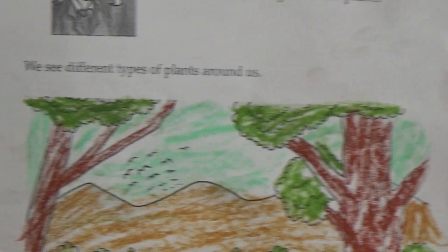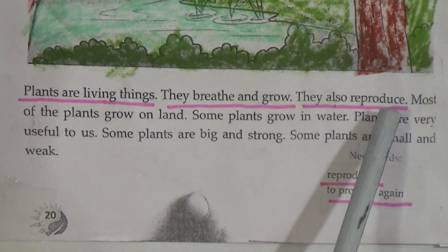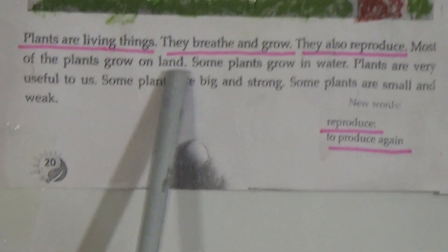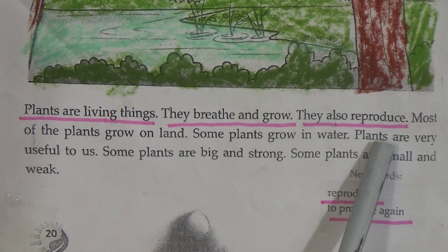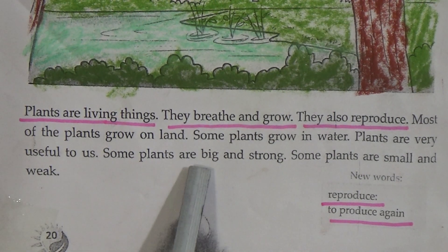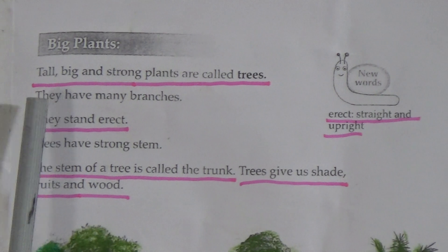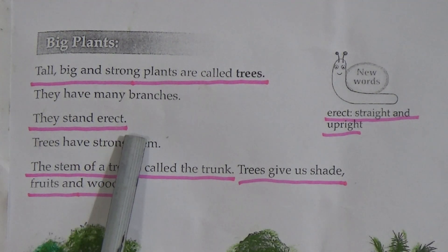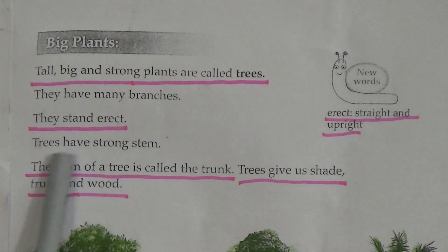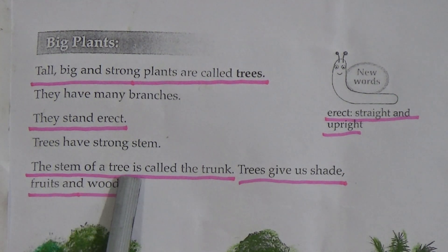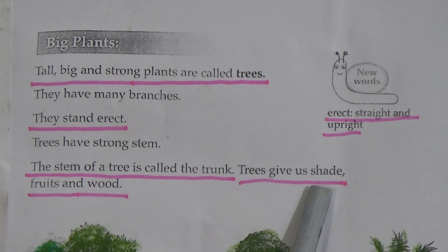Let me repeat this lecture again. Plants are living things — they breathe and grow; they also reproduce. Reproduce means to produce again. Most plants grow on land; some grow in water. Plants are very useful to us. Tall, big, and strong plants are called trees. They have many branches and stand erect. Erect means straight and upright. Trees have a strong stem — the stem of a tree is called the trunk.